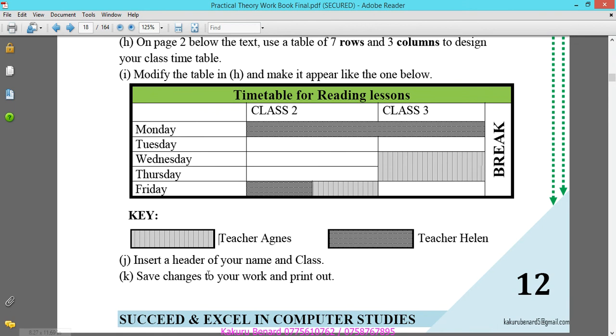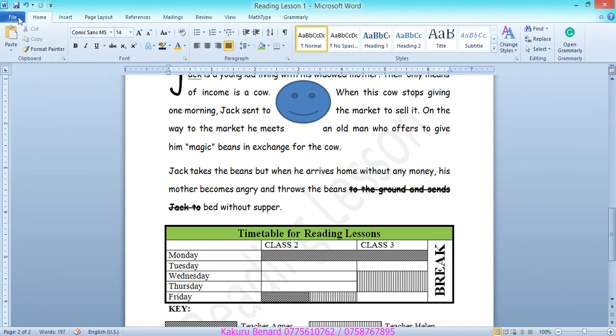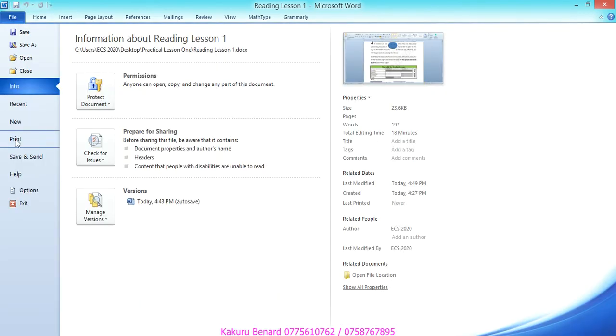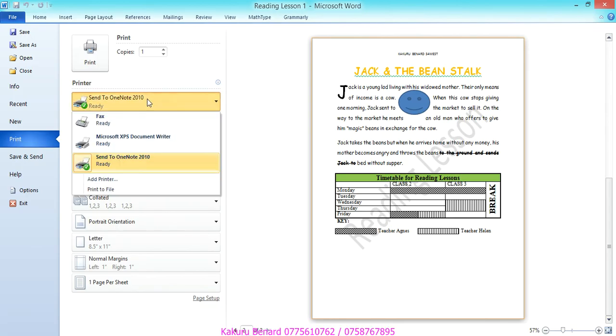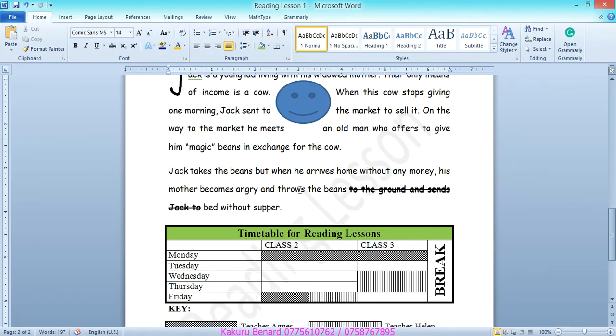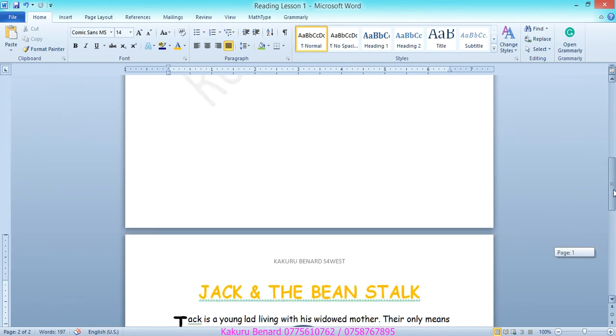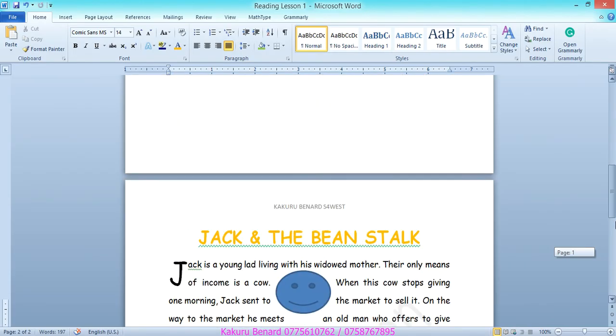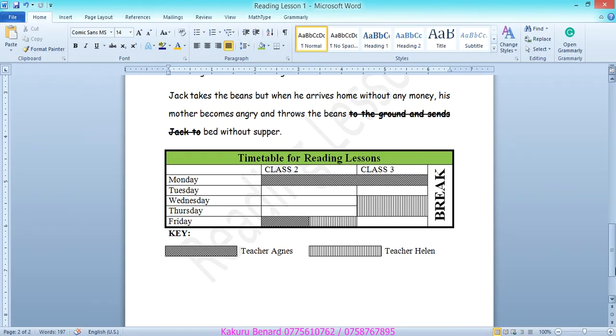Next on our instruction is save changes to your work and make print out. We have saved. We can click file, print. From here you choose from your printers which one is available, and here you can choose number of copies you want to print, and then you say print. Thanks for watching, please subscribe to my YouTube channel for more lessons. Please like my page and subscribe to my YouTube channel, thank you very much.